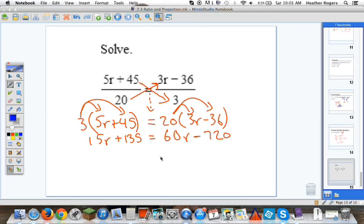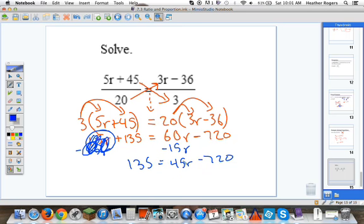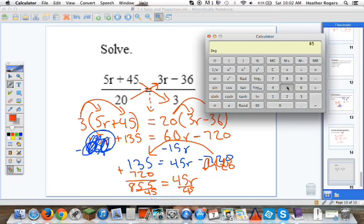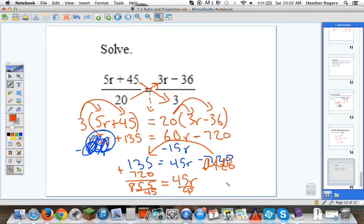Now I want to go ahead and get the numbers on one side, letters on the other. I want to move my 15r over because I have more r's over here and I like to keep things positive. So I'm going to go ahead and move the 15r by subtracting it because it was a positive 15r. I'm going to subtract 15r. 60 minus 15r is 45r. I keep the minus 720. I keep the 135 and I keep the equal sign. Now I have my letters on the right side, so that means my number here, 720, has to go to the other side. Well, if it's minus 720, I have to do the opposite. I have to undo it. I add 720 to both sides, plus 720. When I do that, I get 855 equals 45r. Now I'm going to go ahead and divide by 45, divided by 45. 855 divided by 45 gives me 19. r must be 19.